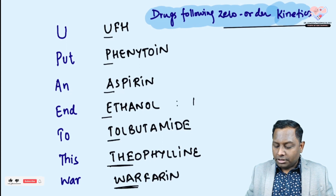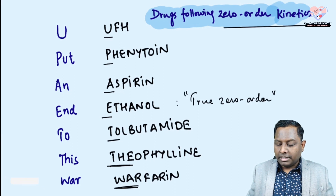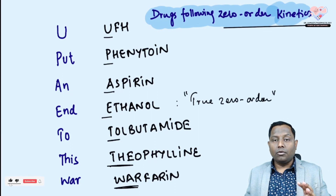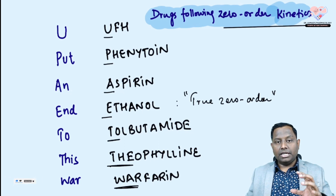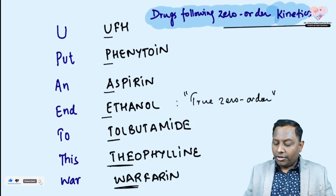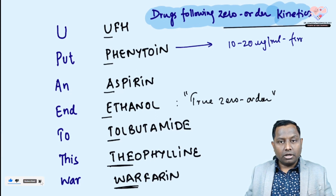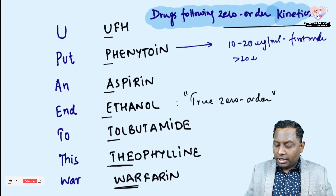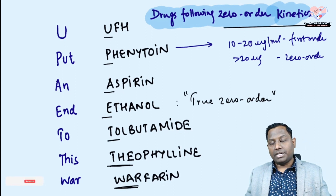Remember, ethanol is the one that follows true zero-order kinetics. The rest are pseudo zero-order — meaning in initial conditions they follow first-order, but at higher plasma concentrations they start following zero-order kinetics. For example, phenytoin follows first-order up to 10–20 mcg/mL, but beyond 20 mcg/mL it starts following zero-order and begins to accumulate because clearance is inversely proportional.